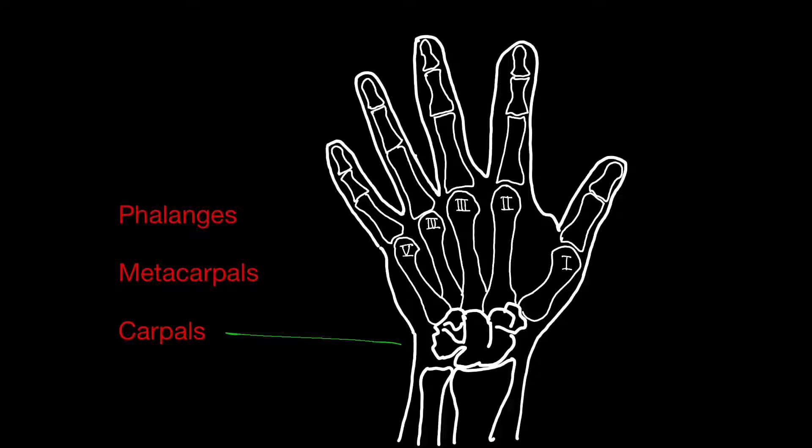So we've already met the carpals, the wrist bones. We've got the metacarpals in the palm beyond the wrist bones and we've got the phalanges in the fingers which are like soldiers lined up in neat formation.